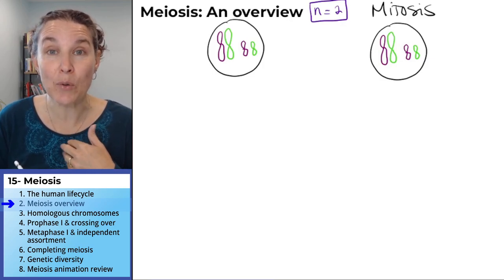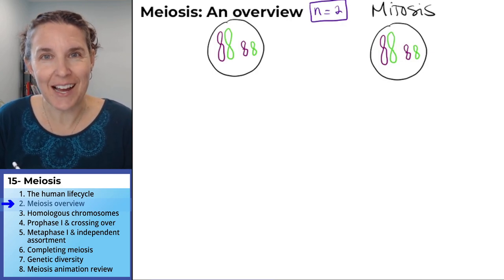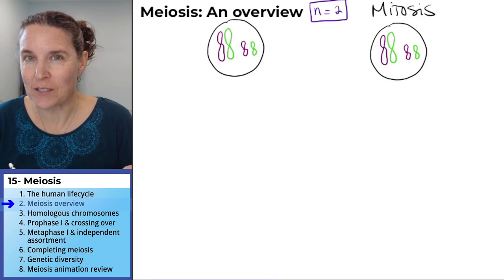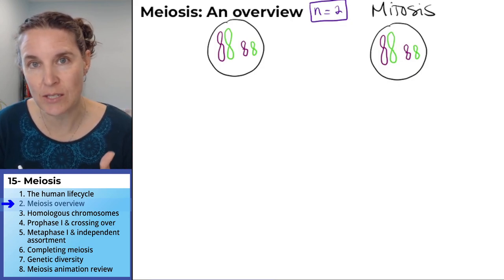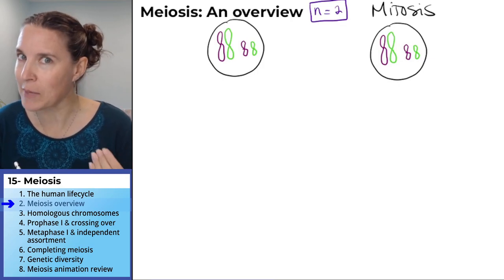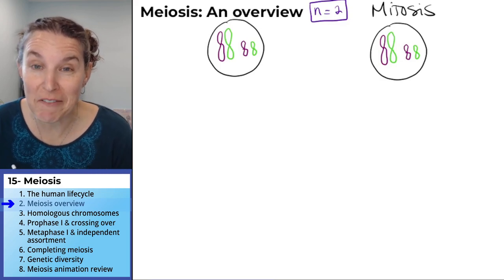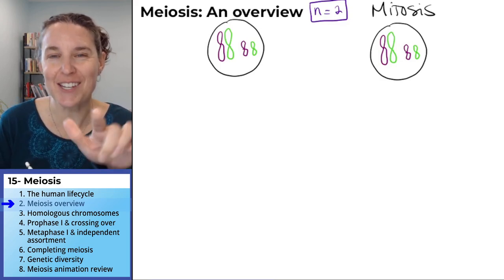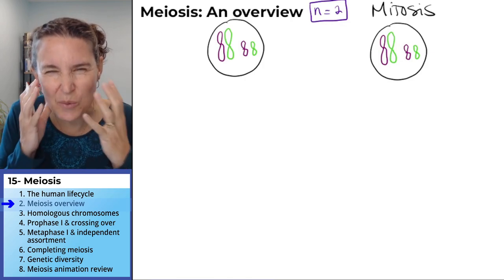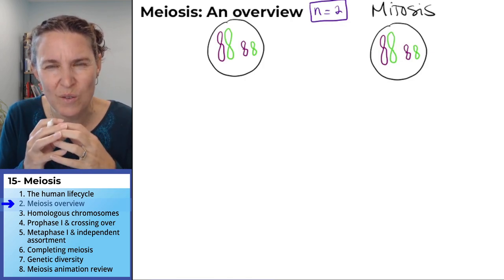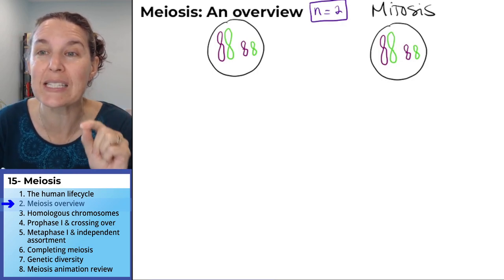Our haploid number is 23. So I'll tell you right now, even though it might feel a little overwhelming to draw four chromosomes in each one of these stages of meiosis and mitosis, we could be drawing 23 of them and you don't have to. So we'll just do two just so we can visualize all the things that are happening in these processes and where they're really similar.